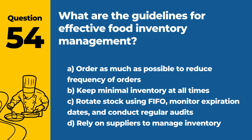Question 54. What are the guidelines for effective food inventory management? a. Order as much as possible to reduce frequency of orders. b. Keep minimal inventory at all times. c. Rotate stock using FIFO, monitor expiration dates, and conduct regular audits. d. Rely on suppliers to manage inventory. Answer c. Rotate stock using FIFO, monitor expiration dates, and conduct regular audits. Effective food inventory management involves rotating stock using the FIFO method, monitoring expiration dates, and conducting regular audits to ensure food quality and safety.